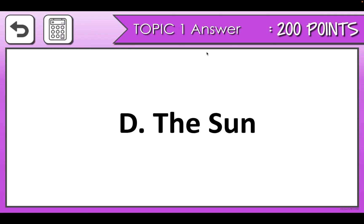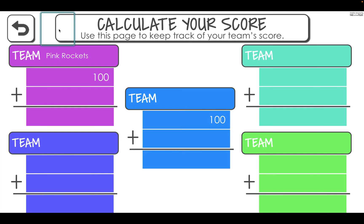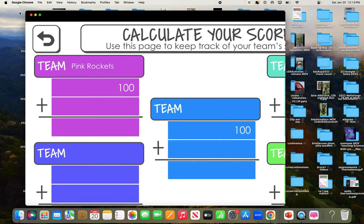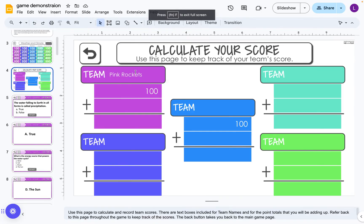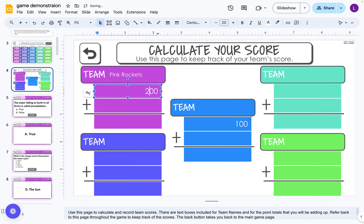After everybody's answered and students have self-corrected, we're going to go to this little calculator, which will take us to the scorecard. In order to use it, I need to be in edit mode. I've named this team Pink Rockets and I'm going to give them 200 points. You can set this up ahead of time and the students can choose their own name. You can have up to five teams and just keep adding and calculate.